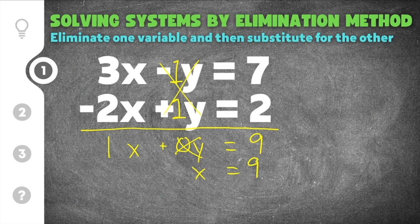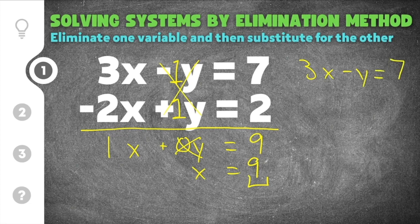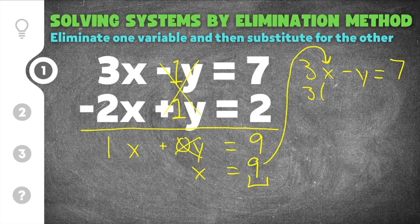Now that I know x is equal to 9, I can take this 9 and substitute it back into either equation for x. I'm going to pick the first equation: 3x minus y equals 7. I'm substituting in for x because 9 is equal to x. So we're going to say 3 times 9 minus y equals 7. Well, 3 times 9 is 27, so we have 27 minus y equals 7, and then I have to solve for y.